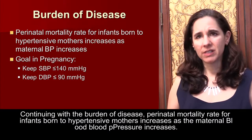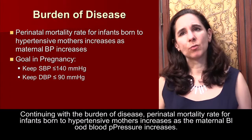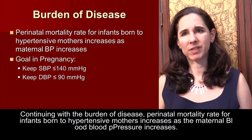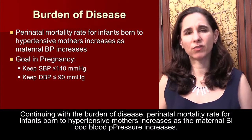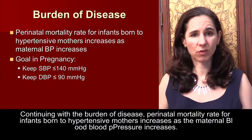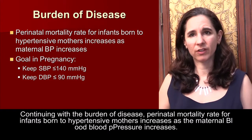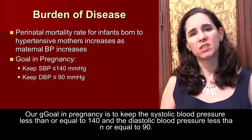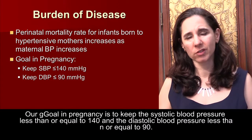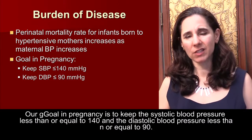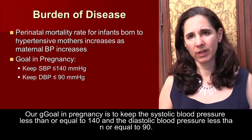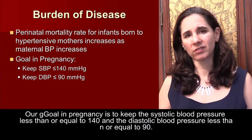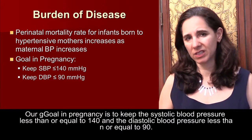Continuing with the burden of disease: the perinatal mortality rate for infants born to hypertensive mothers increases as maternal blood pressure increases. Our goal in pregnancy is to keep the systolic blood pressure less than or equal to 140 mmHg and the diastolic blood pressure less than or equal to 90 mmHg.